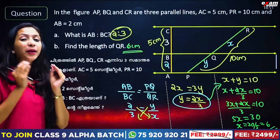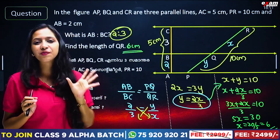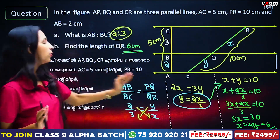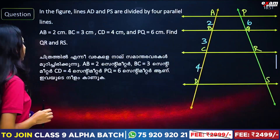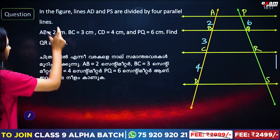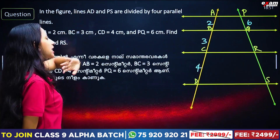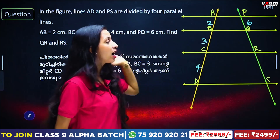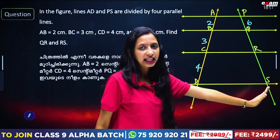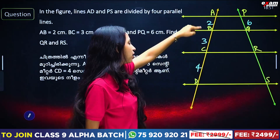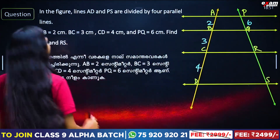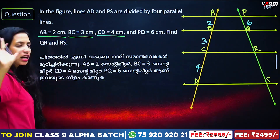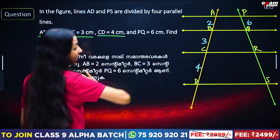Okay, clear? Now let's go to the next question. In the figure, lines AD and PSR are divided by 4 parallel lines, with ratios 2, 3, 4, and 6.